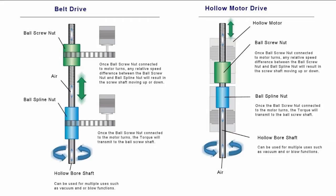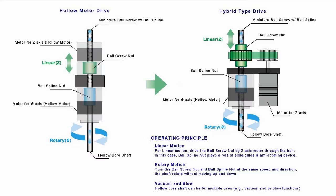The next couple of diagrams show a few ways the BSSP can be used in an application, from a belt drive to hollow motor to finally a hybrid, which is a combination of the belt and hollow motor type drive. The hybrid is the most compact unit.